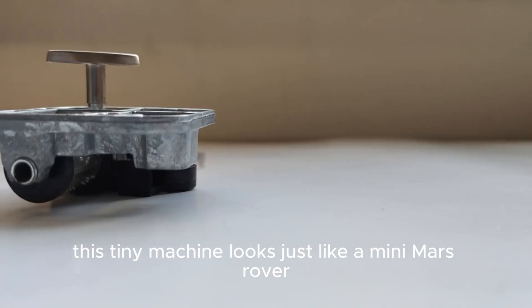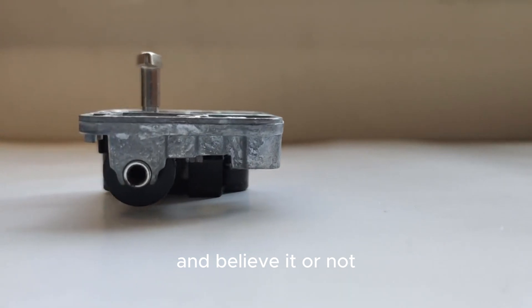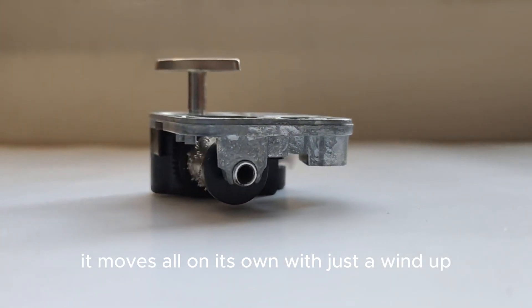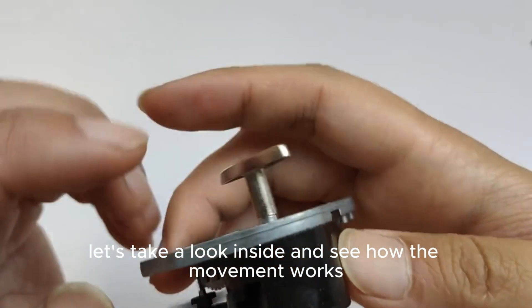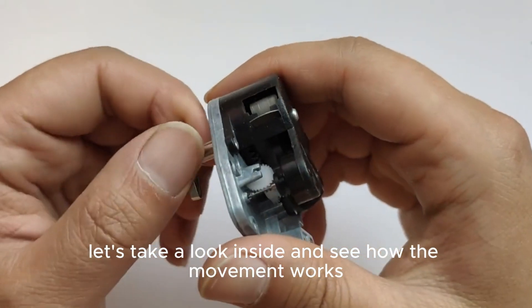This tiny machine looks just like a mini mars rover and believe it or not, it moves all on its own with just the wind up. Let's take a look inside and see how the movement works. We start by winding the key.